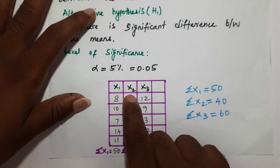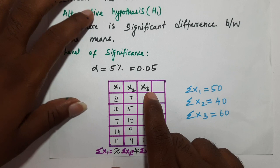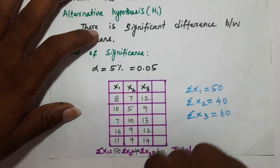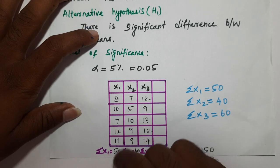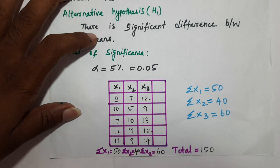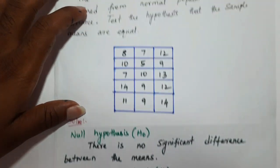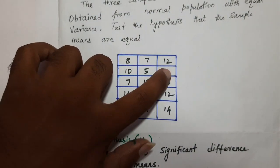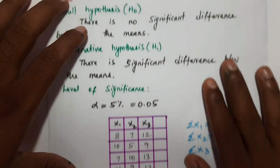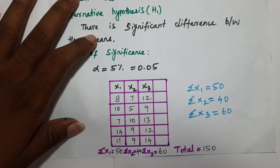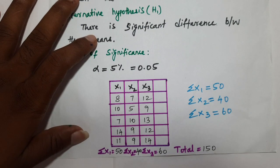Now setting up the data: we have columns x1, x2, x3 arranged in a one-way row-column format. The data is given in three columns c1, c2, c3 corresponding to x1, x2, x3.